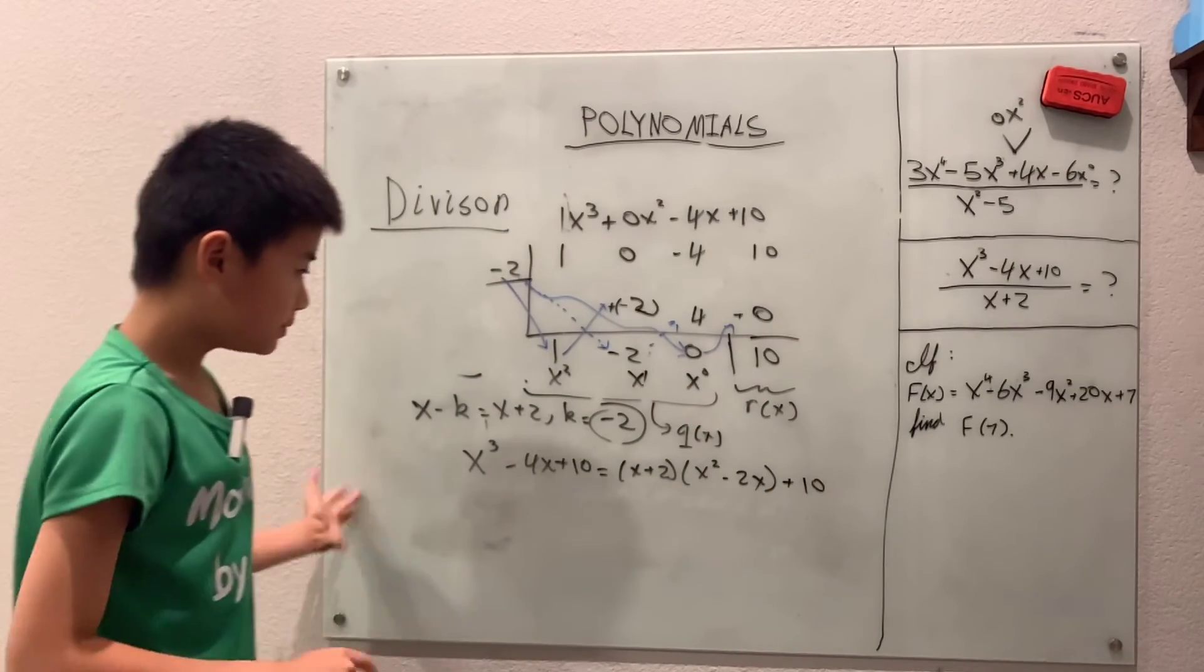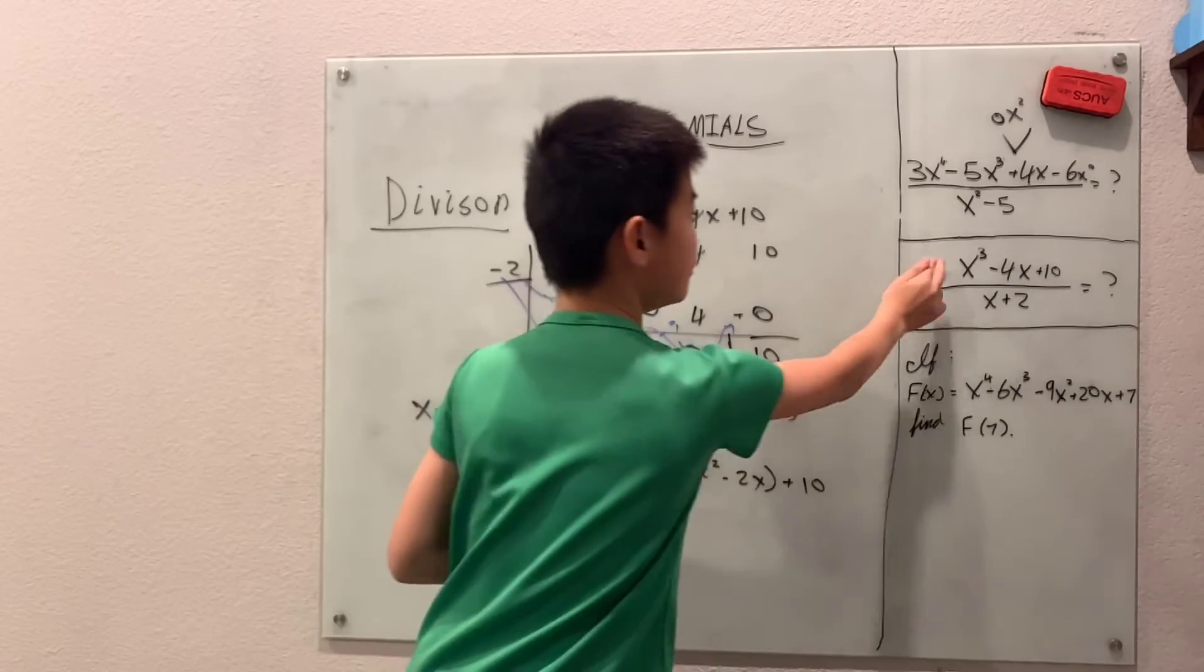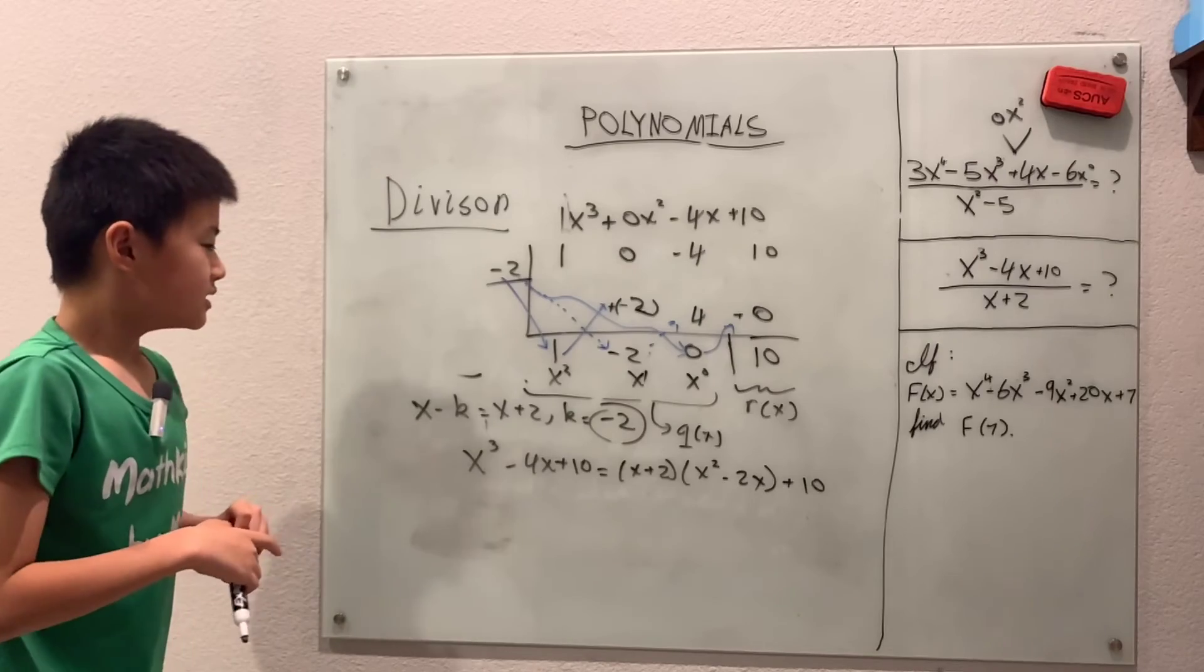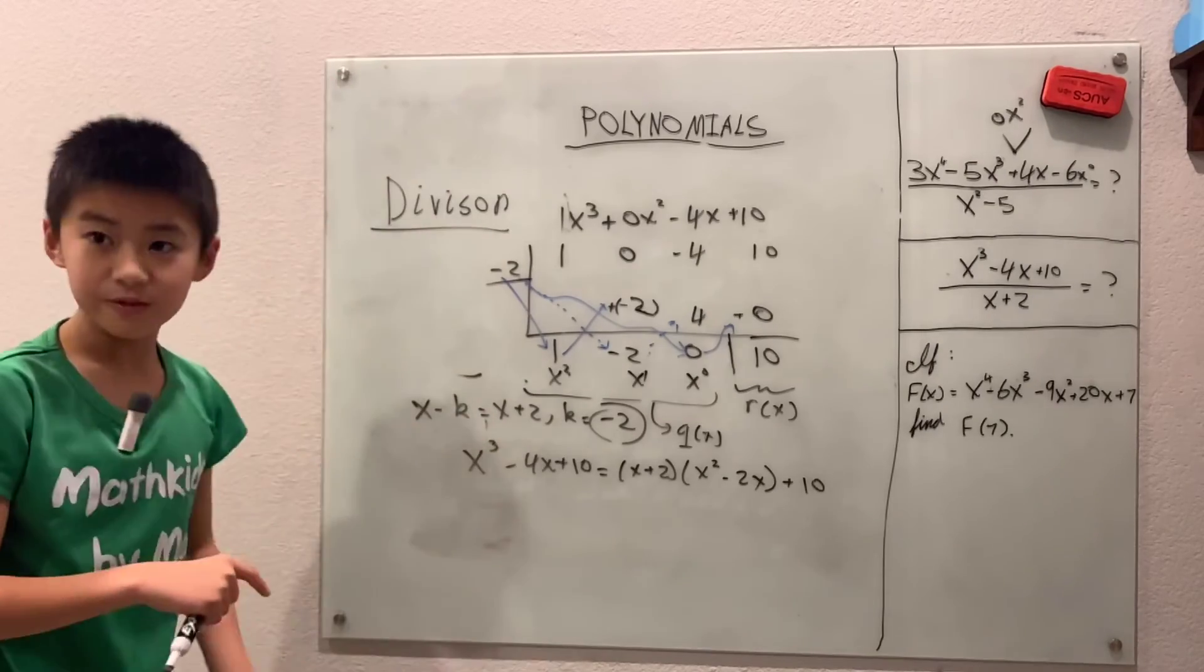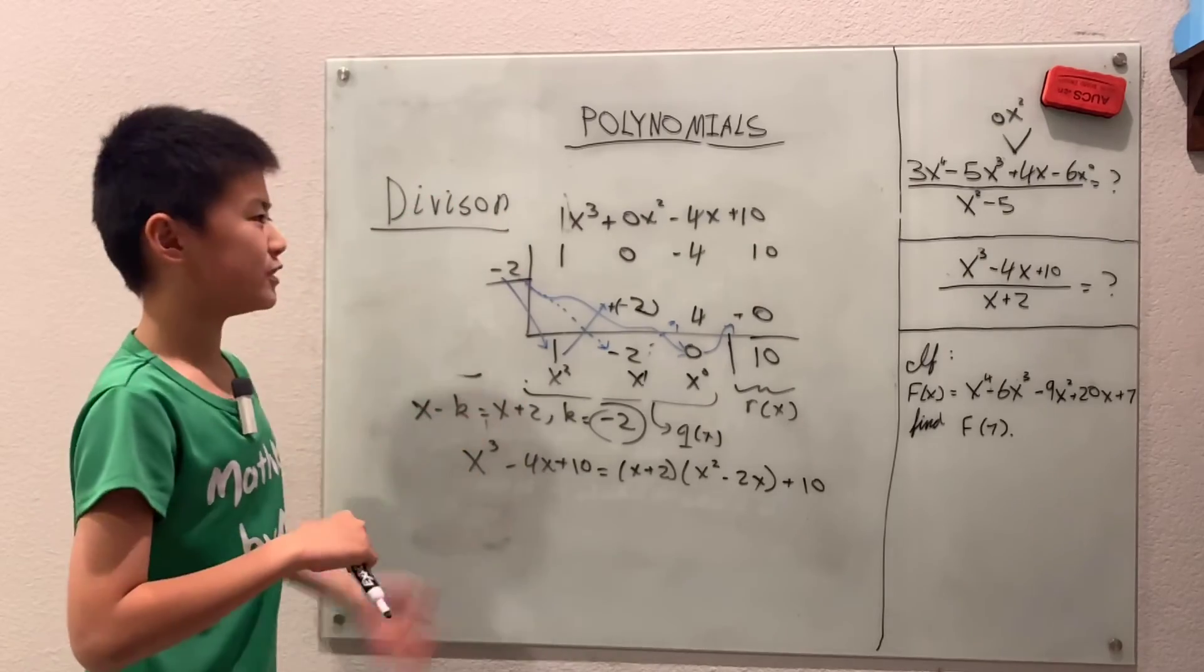And then what we have after this is basically a rewritten form of x cubed minus 4x plus 10. Now of course, why do we want to know all this division, right? Like why do I have to use synthetic division? Why do I have to find the q(x)? Why can't we just stick with the original polynomial?